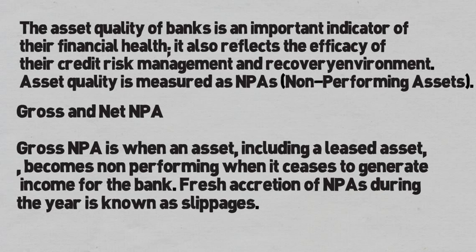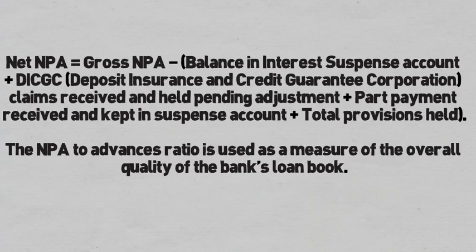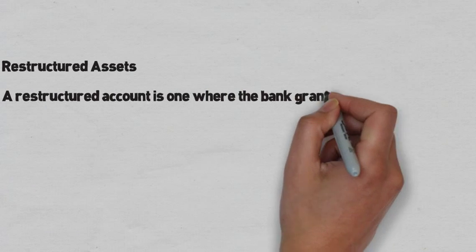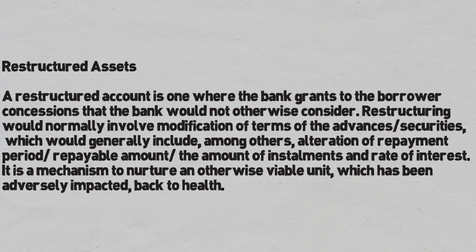Fresh accretion of NPAs during the year is known as slippages. To calculate net NPA, balances in interest suspense account, plus Deposit Insurance and Credit Guarantee Corporation claims received and held pending adjustment, plus part payment received and kept in suspense account, plus total provisions held, are subtracted from gross NPA. The NPA to advances ratio is used as a measure of overall quality of a bank's loan book.